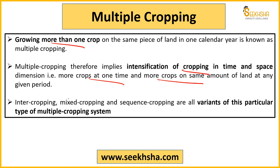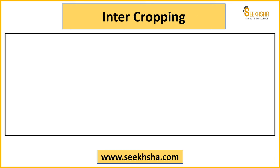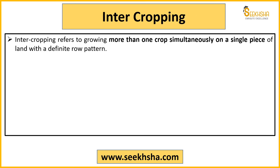Multiple cropping has various forms: inter-cropping, mixed cropping, and sequence cropping — these are all examples under the multiple cropping system. Inter-cropping is where you grow more than one crop simultaneously on a single piece of land. In inter-cropping, you follow a definite row pattern. Multiple row patterns are possible depending on the crops you are growing.